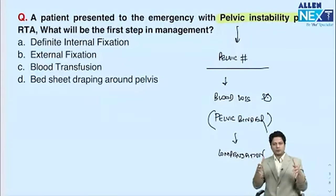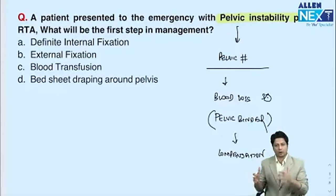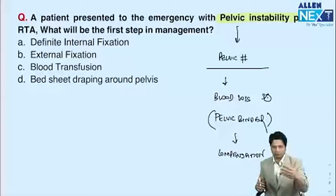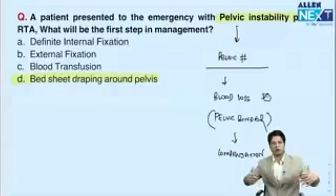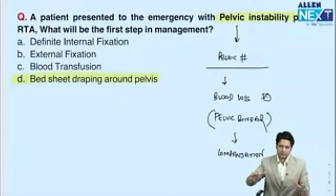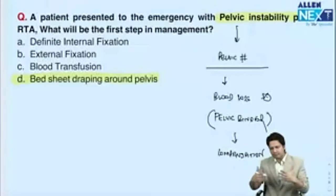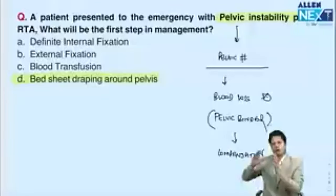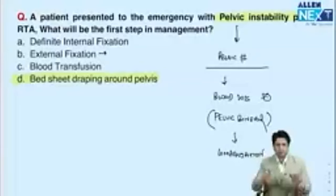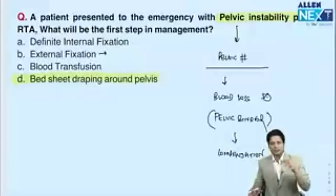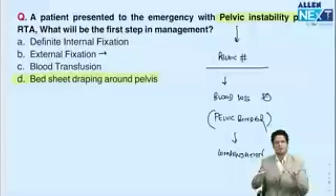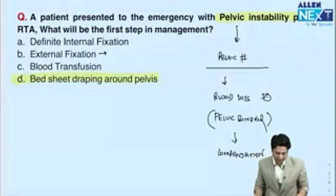Initial management: bind all bones, compress the pelvis to limit oozing from the cancellous bone region, as massive internal hemorrhage can result in death. Immediate management requires bed sheet draping around the pelvis if a pelvic binder is unavailable. Definitive internal fixation follows after stabilization. External fixation requires regional/spinal anesthesia — if the patient is already in shock, giving spinal anesthesia can aggravate shock. So hemodynamic stability must be achieved first.